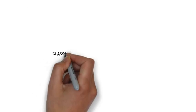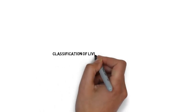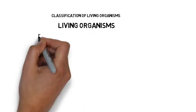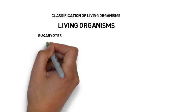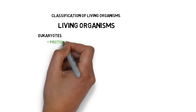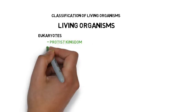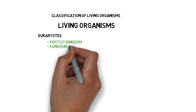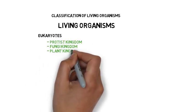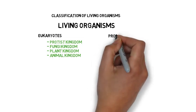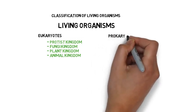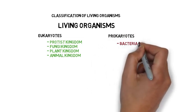The classification of living organisms. Living organisms can be divided into two parts: Eukaryotes, consisting of the Protist kingdom, Fungi kingdom, Plant kingdom, and Animal kingdom; or Prokaryotes, which contains the Bacteria kingdom.